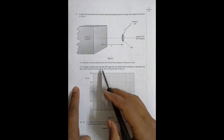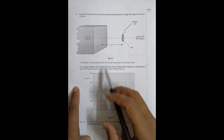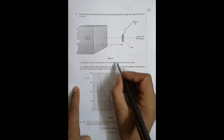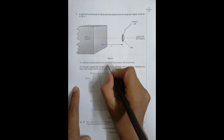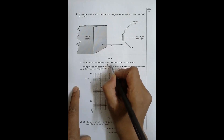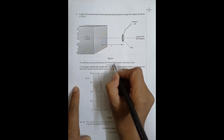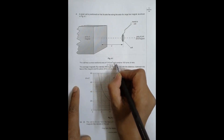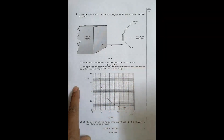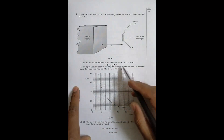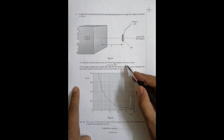The coil has a cross-sectional area of 0.40 cm², which I write as 0.40 × 10⁻⁴ m², because 1 cm = 10⁻² m. And the coil contains 150 turns of wire.